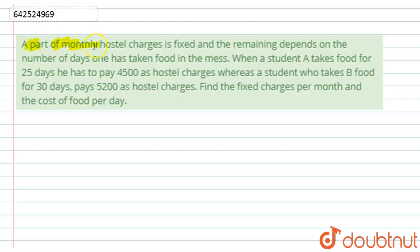Hello students, let's start with the question. Here we have given a part of monthly hostel charges is fixed and the remaining depends on the number of days one has taken food in the mess. When student A takes food for 25 days, he has to pay 4500 as hostel charges, whereas student B who takes food for 30 days pays 5200 as hostel charges. Find the fixed charges per month and the cost of food per day.